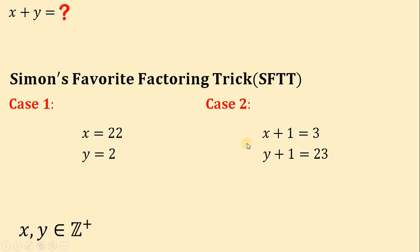On the other hand, on case 2, if we subtract 1 from both sides on the first equation, we get that the value of x must be 2. And if we subtract 1 from both sides on the second equation, we get that the value of y must be equal to 22.